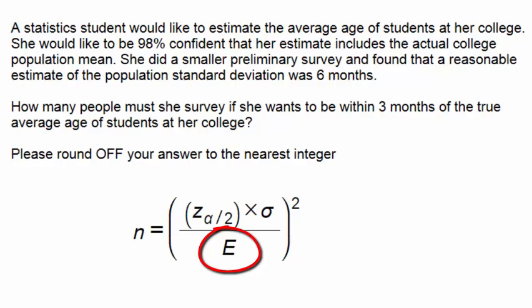Capital E stands for the margin of error. And our student wants to be within three months of the true average age of students at her college.